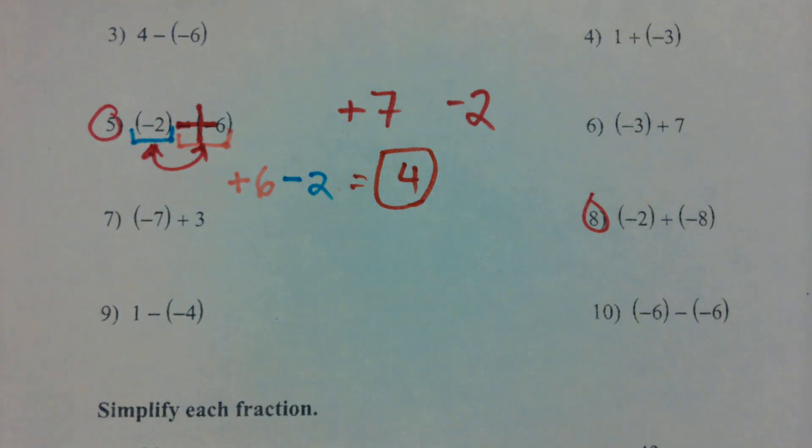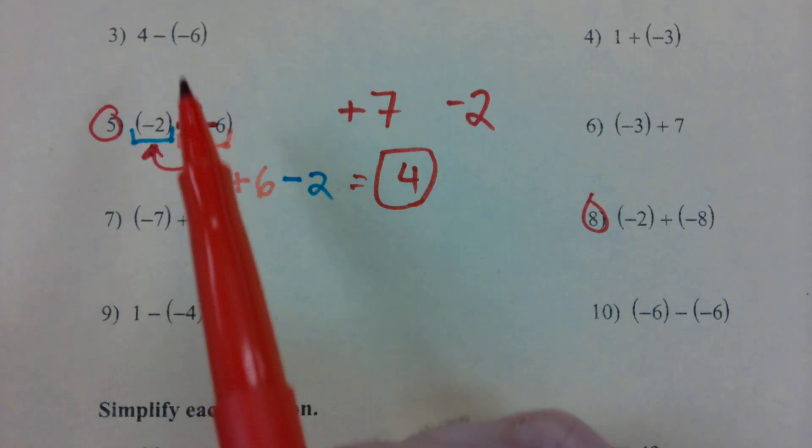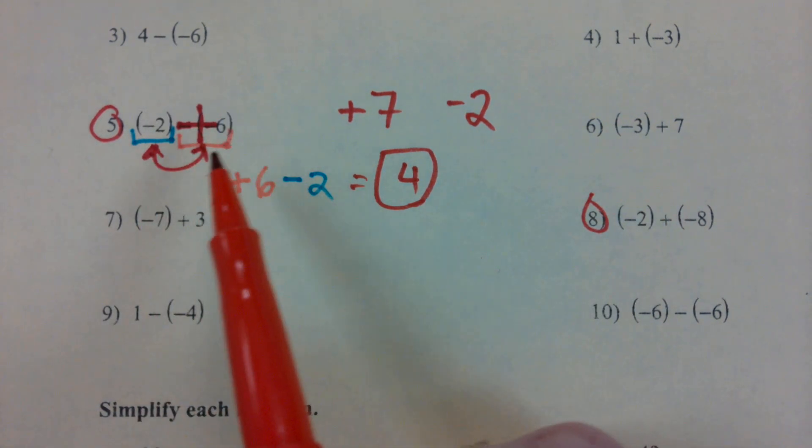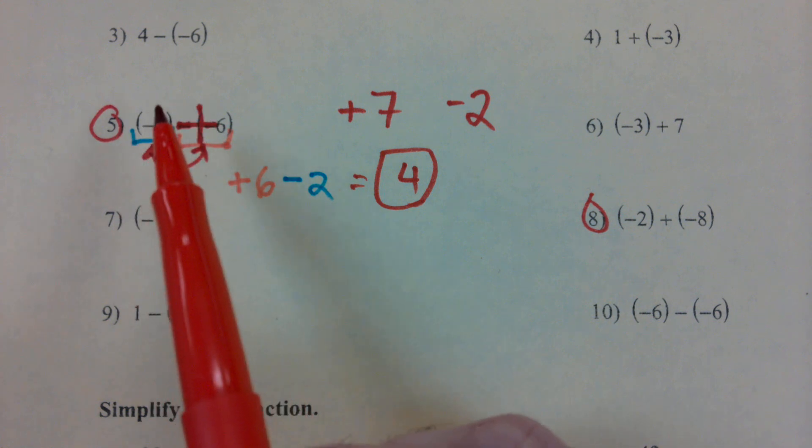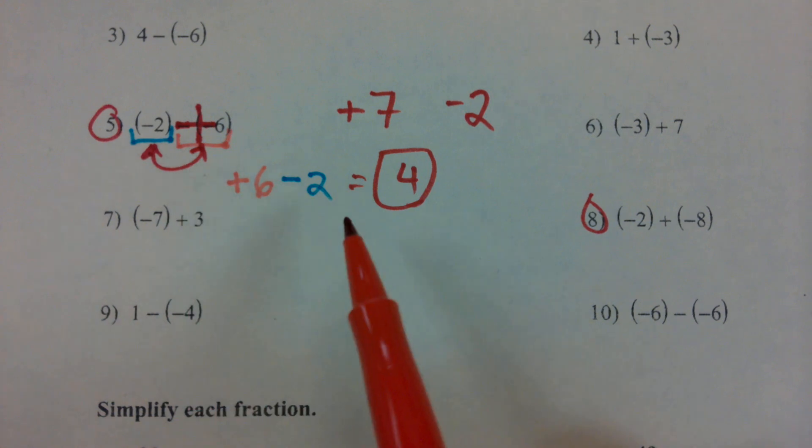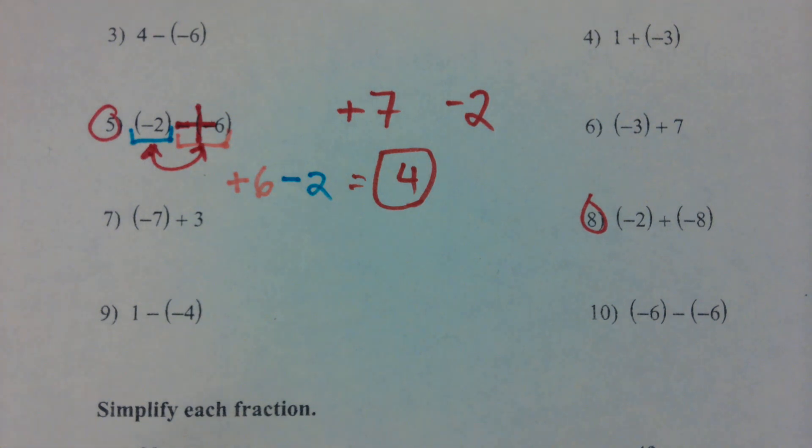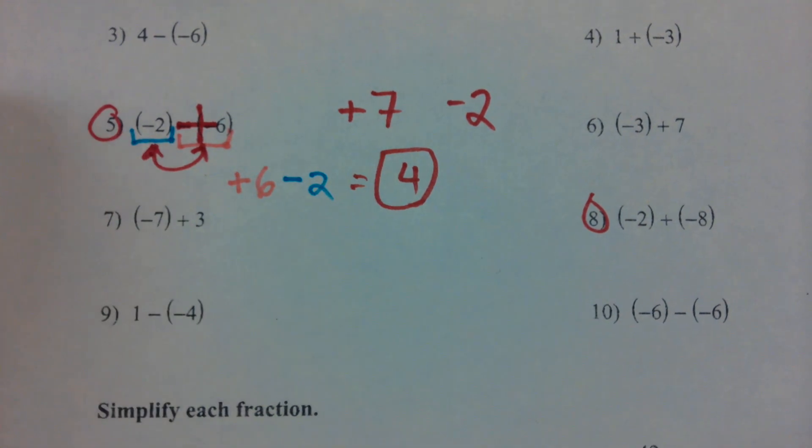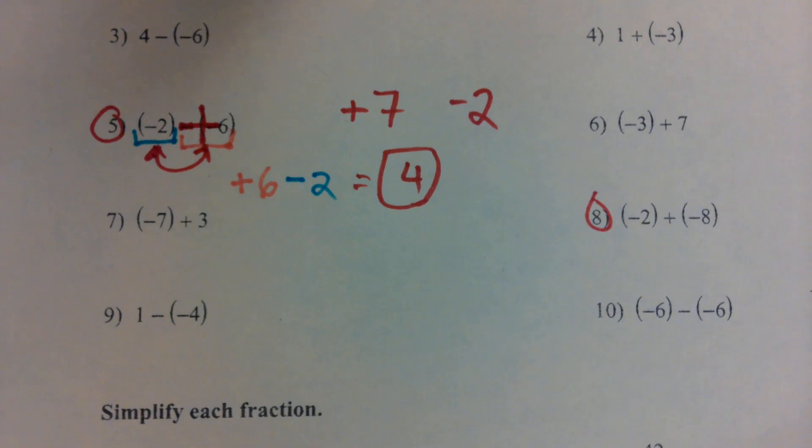Now that might be over-explaining for some of you, I understand that. But this is going to help us out once we get to the more complicated stuff. You can always swap these numbers around if you include the sign that's attached to the front of it. Negative two plus six is the same exact thing as six minus two, but six minus two is more familiar to us. It's just simple subtraction. Any questions about five?